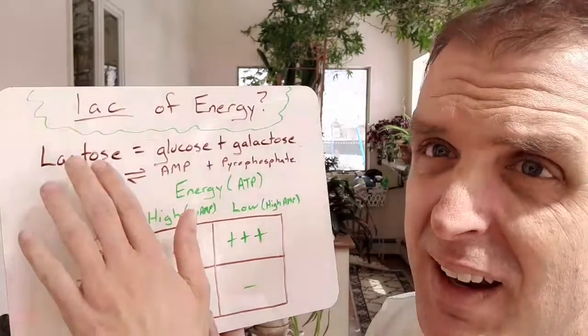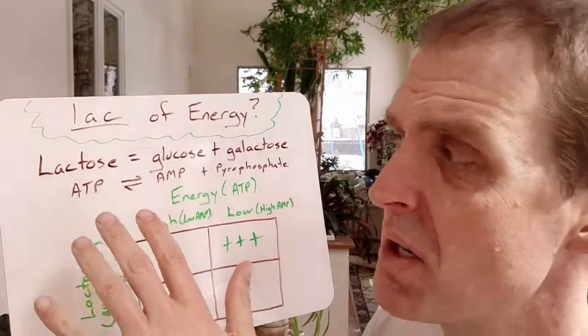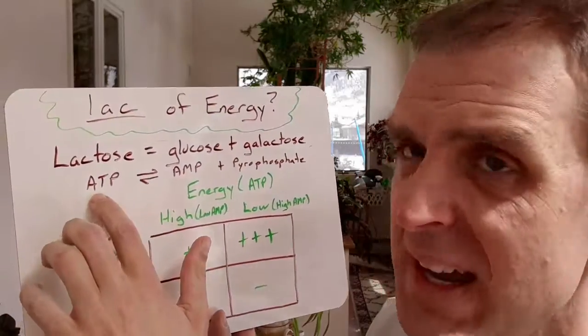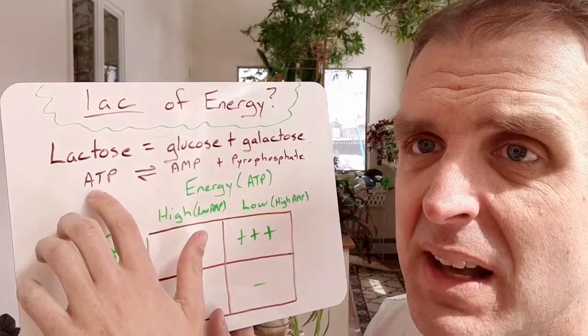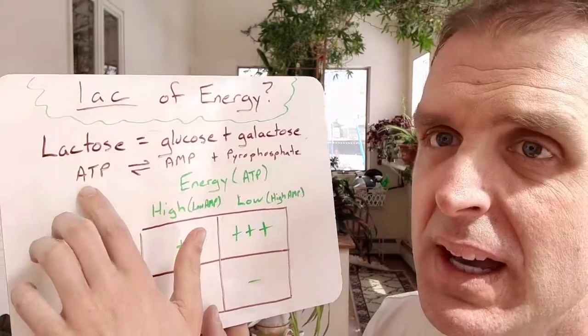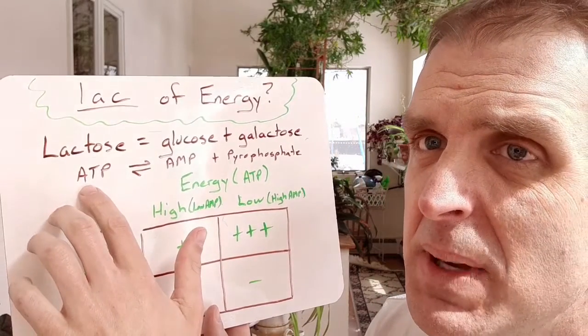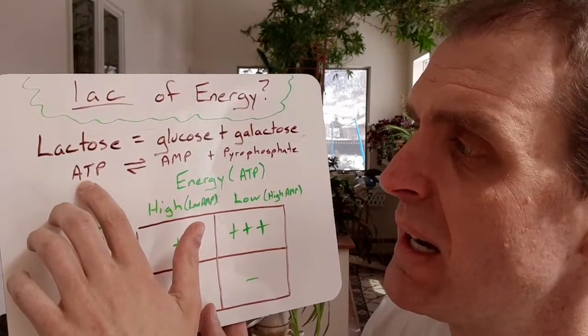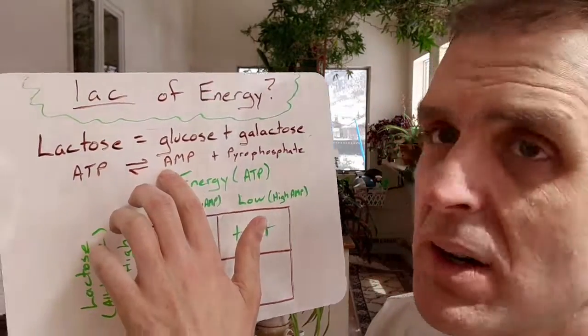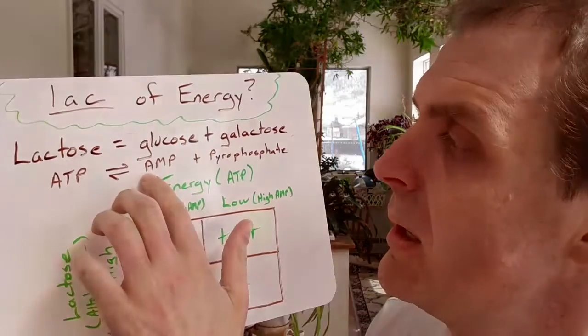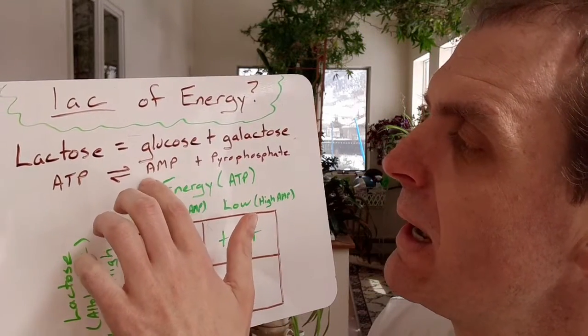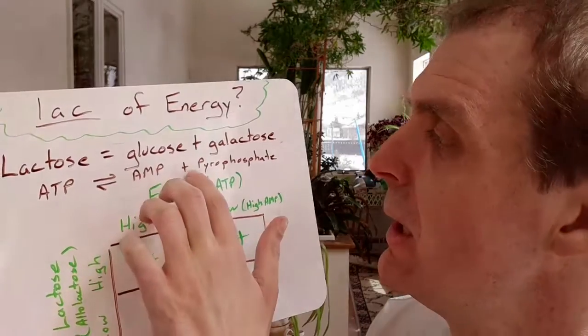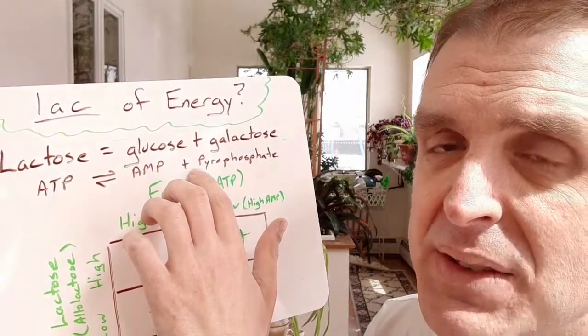This lac operon, the logic of it takes into account whether lactose is around, and it also takes into account whether the cell has ATP. It's not necessarily ATP, but that's the one we're used to thinking of as energy. If you don't have a lot of energy, then your concentration of AMP will be high. AMP, that's adenosine with one phosphate.